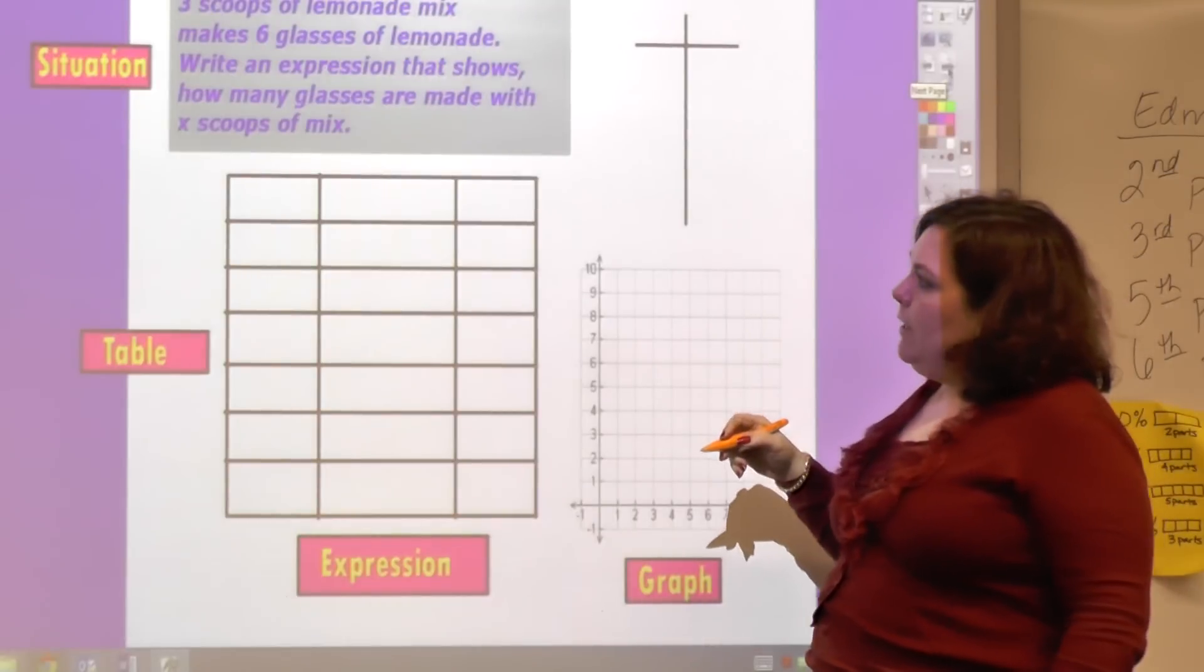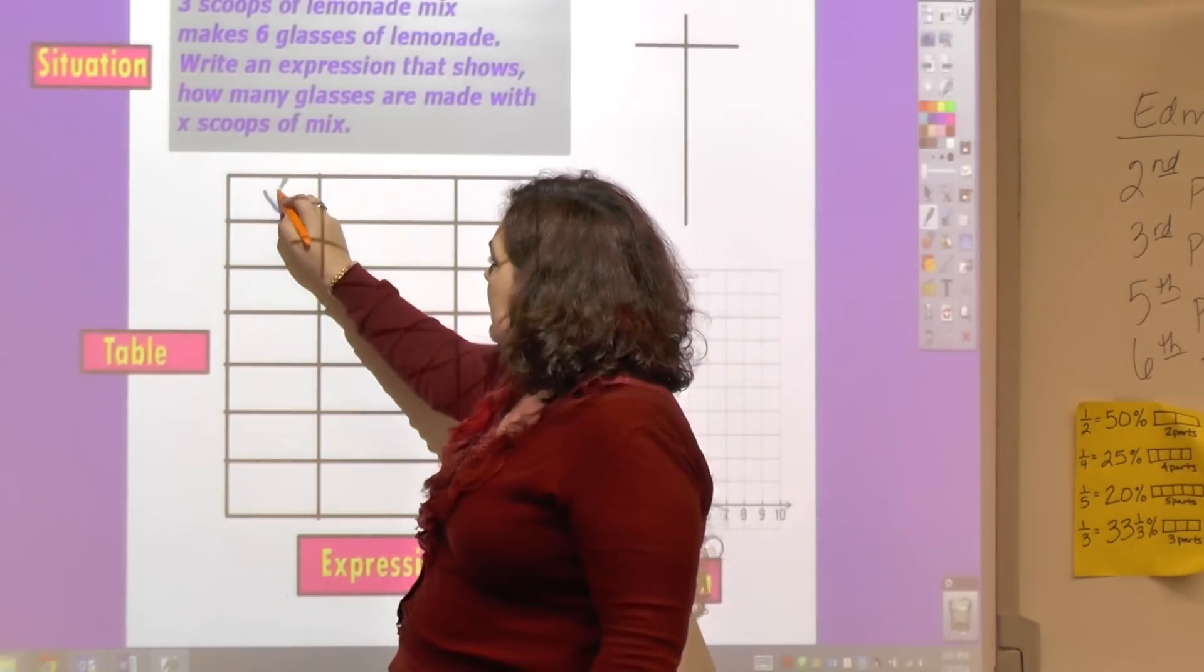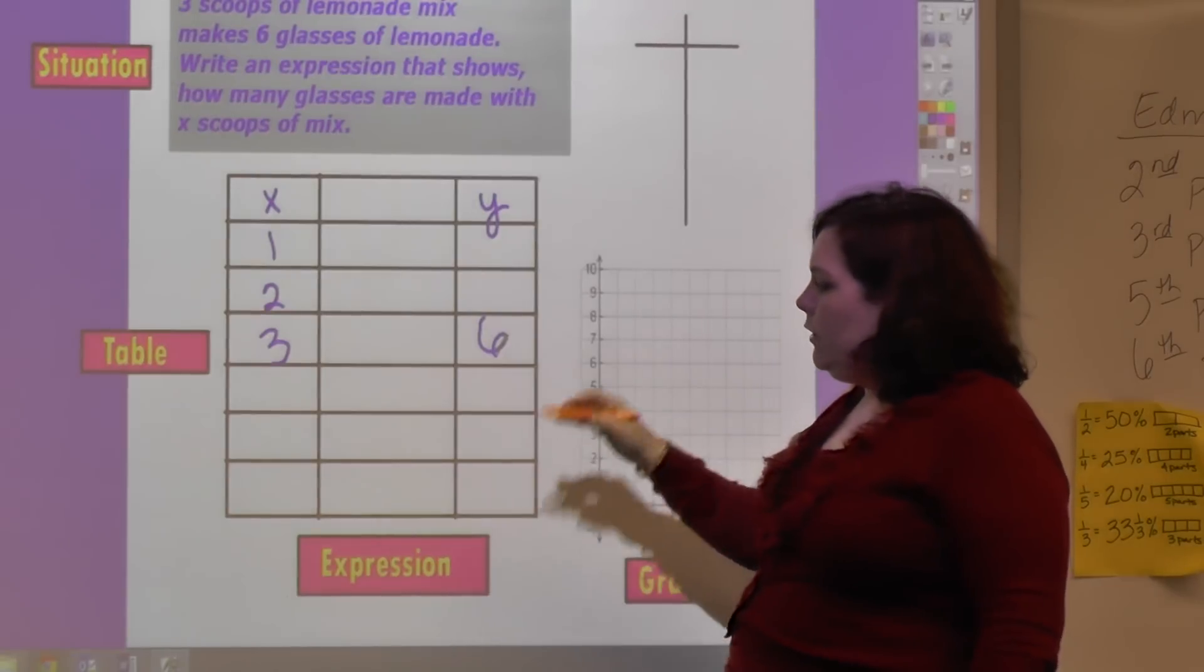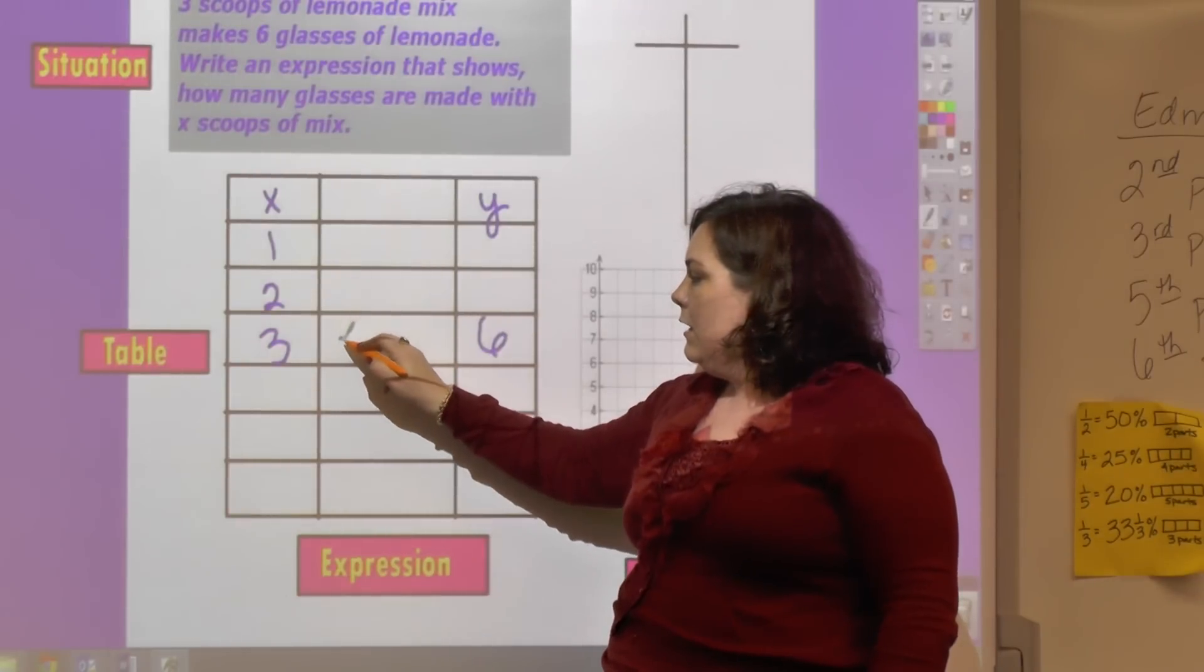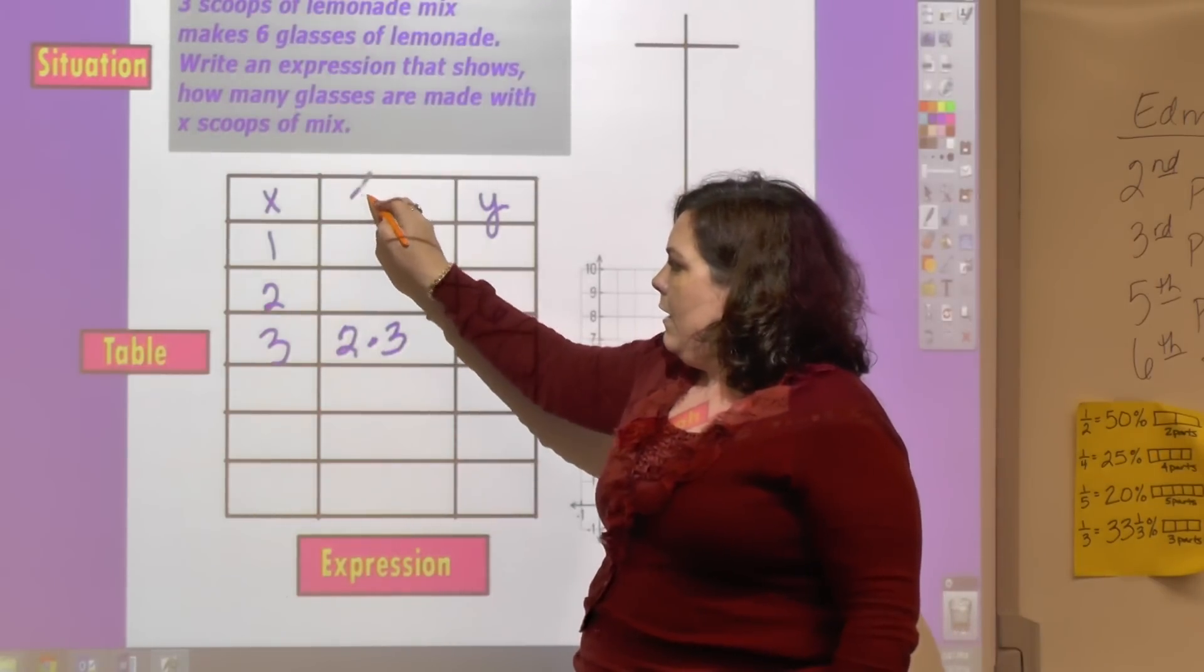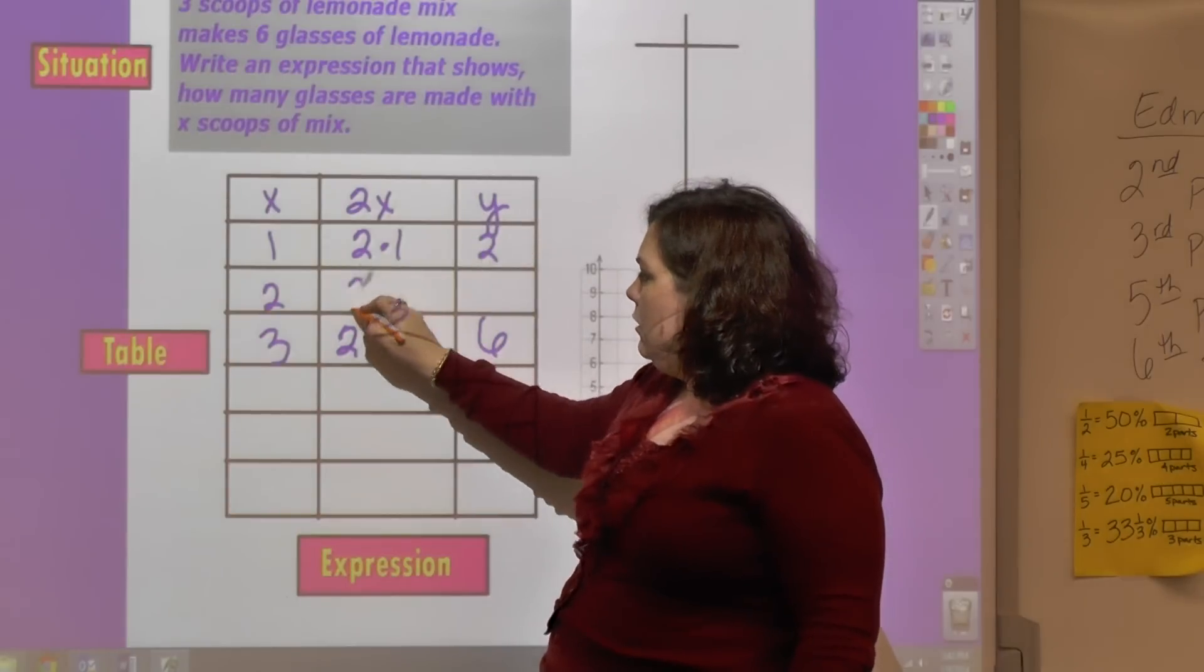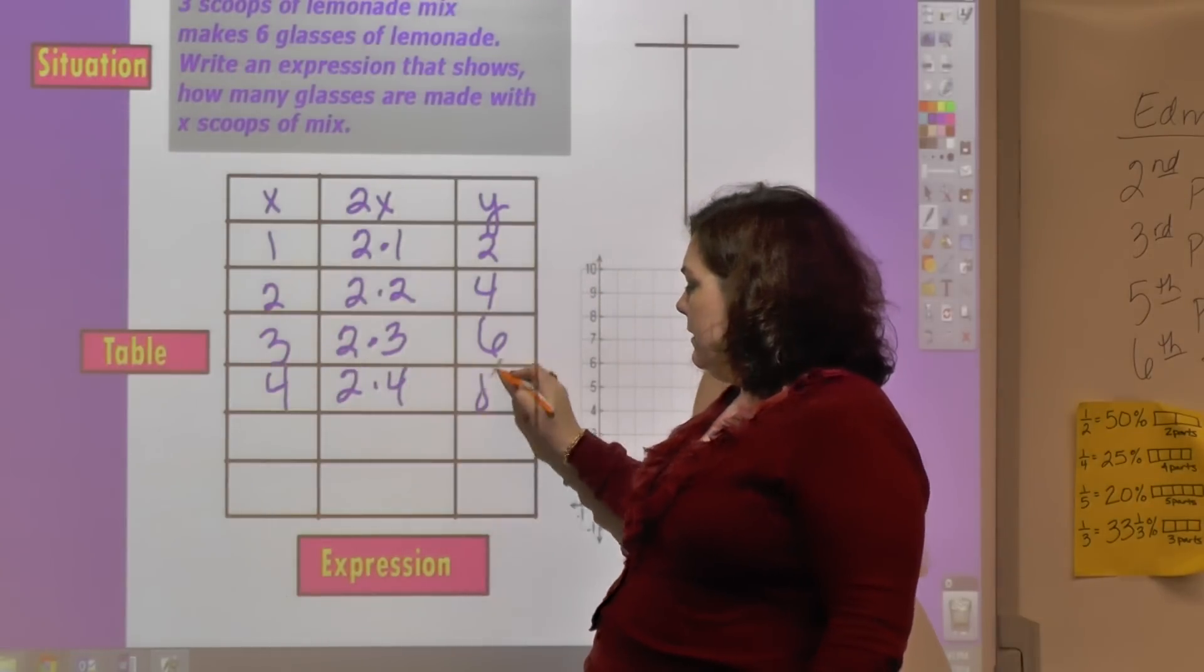Three scoops of lemonade mix makes six glasses of lemonade. So this is X and this is Y. One, two, three scoops makes six. So I have to look at the relationship, what's going on. How do I get from three to six? Well, it's times two. So two times three. My process is times two. So two times one is two, and two times two is four, and two times four is eight.